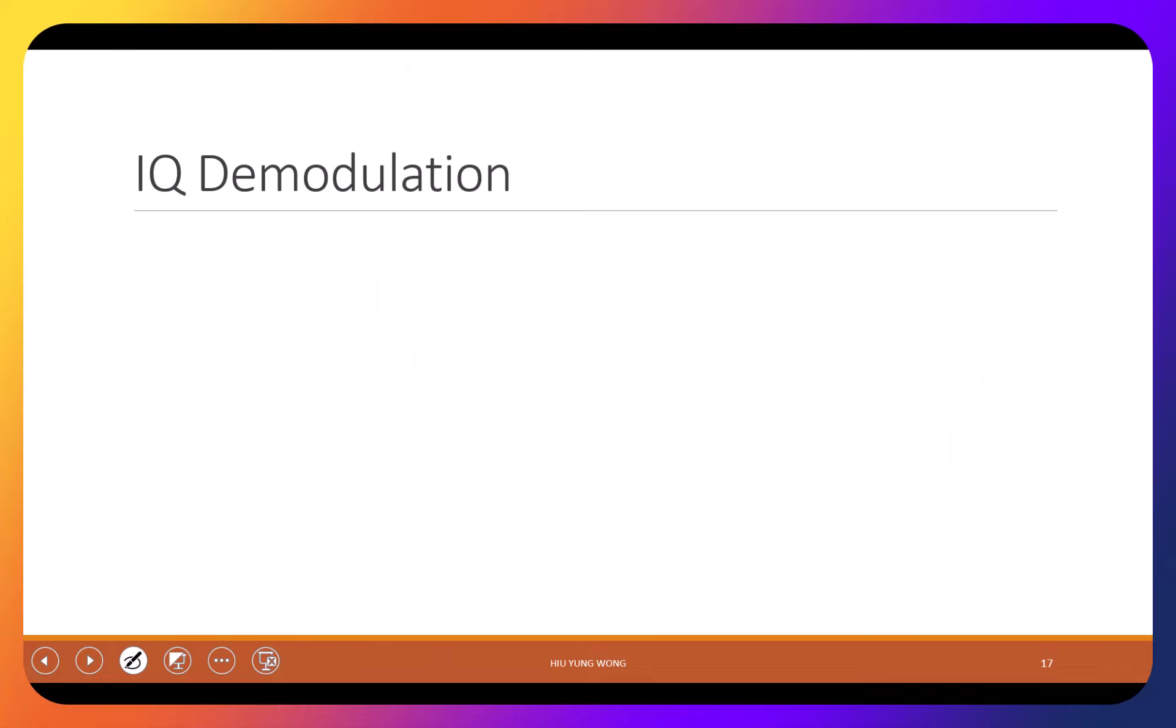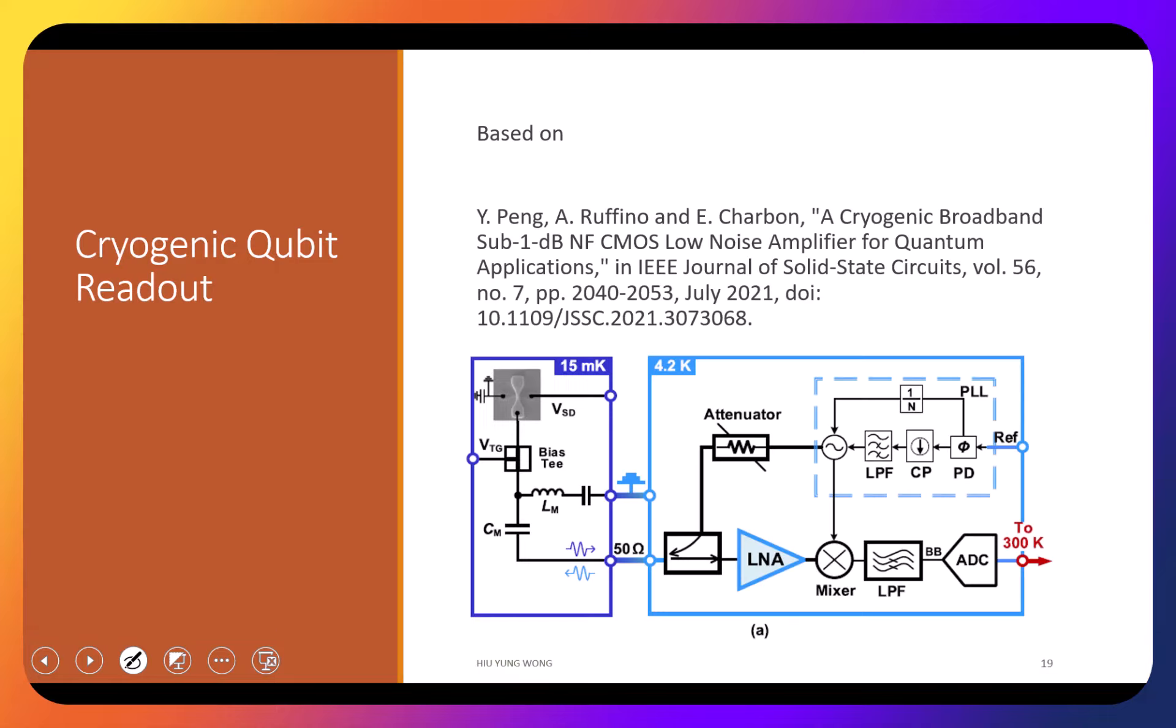I just want to say how do we do this demodulation to get the IQ plot. Remember the story was there actually is this one, but I don't have time to go over this. I just ask you to go home to study this paper if you're interested.